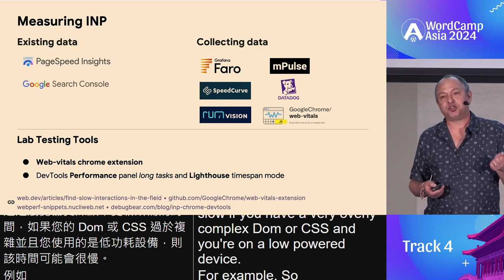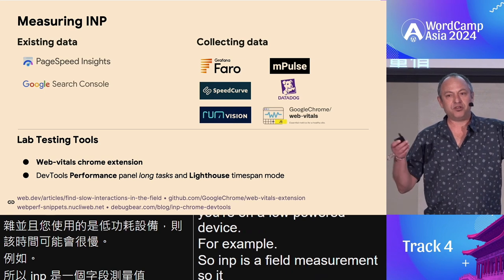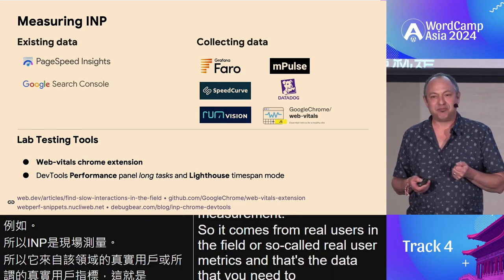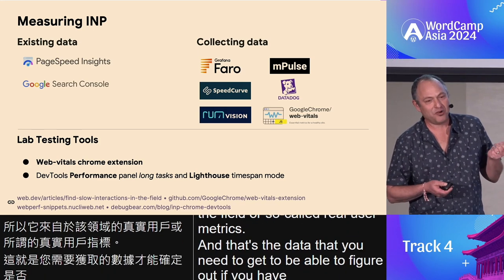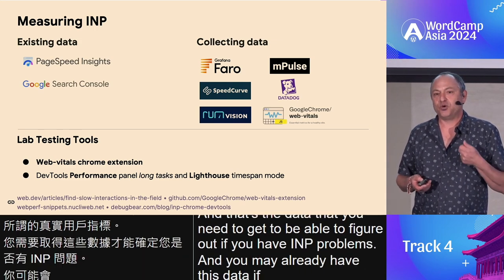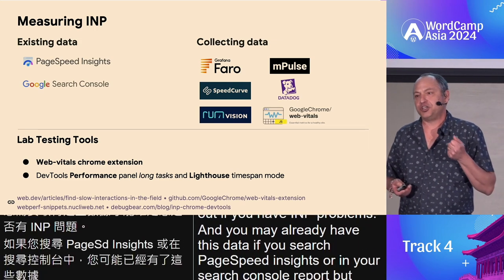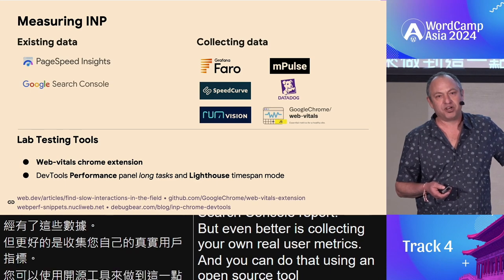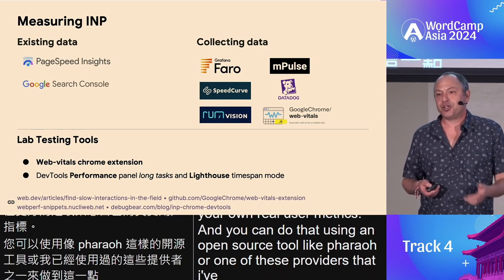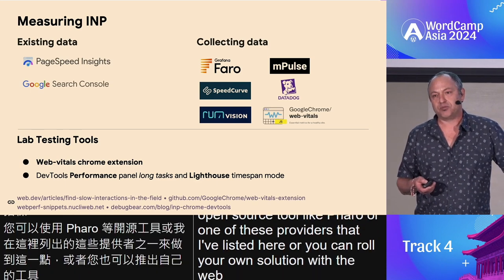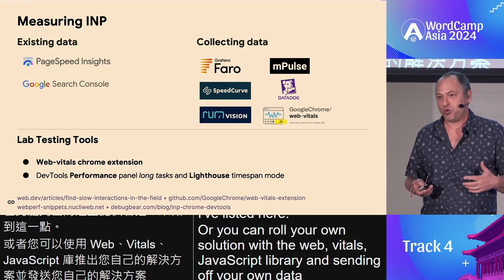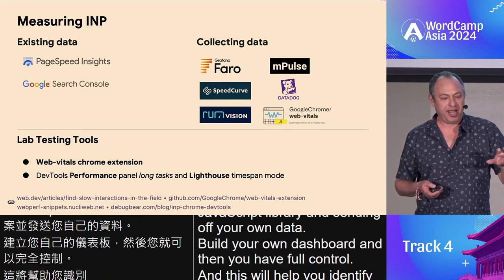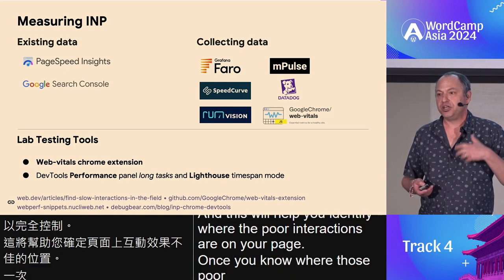INP is a field measurement — it comes from real users in the field, so-called real user metrics. That's the data you need to figure out if you have INP problems. You may already have this data in PageSpeed Insights or your search console report. But even better is collecting your own real user metrics using an open source tool like Faro or one of the RUM providers listed, or you can roll your own solution with the Web Vitals JavaScript library, build your own dashboard, and have full control. This will help you identify where the poor interactions are on your page, and once you know, you can get into fixing them.